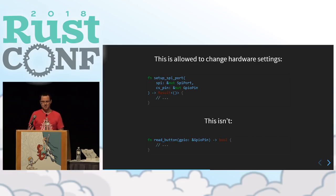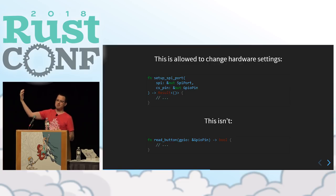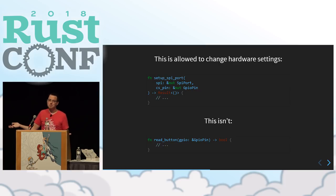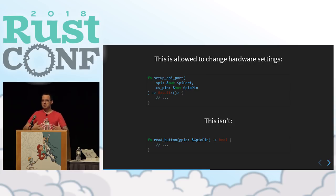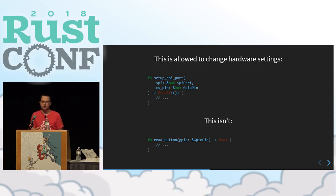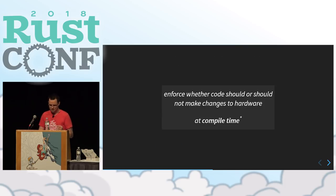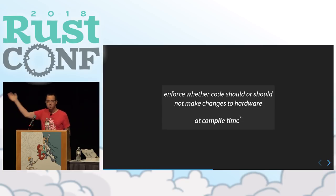It also gives you the ability to understand your software better. If you have a function called setup_spi_port that takes a mutable reference to an SPI port and a GPIO pin, you know this can probably change your hardware. But another function that just reads a button and only takes an immutable reference — you go, okay, this probably isn't going to change anything. This gets you thinking about embedded systems the same way you think about application development in Rust. The struct starts acting like a normal struct, even though under the hood it's a hardware-mapped peripheral. This allows us to enforce whether code should or shouldn't make changes to hardware entirely at compile time — no runtime checking.